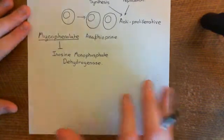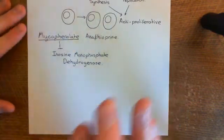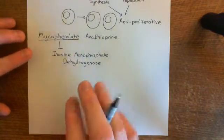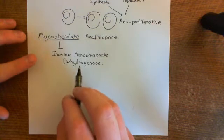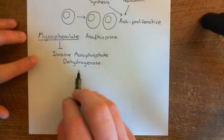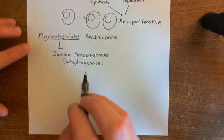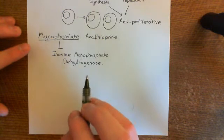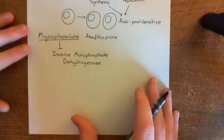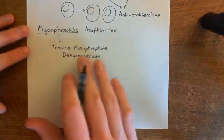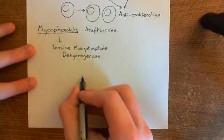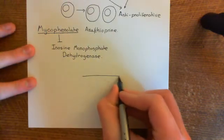Before we see all of that, let's talk about what mycophenolate actually does. It inhibits the enzyme inosine monophosphate dehydrogenase. So what does this enzyme do? Well, first we need to understand what inosine monophosphate is, which is what it's going to act upon.